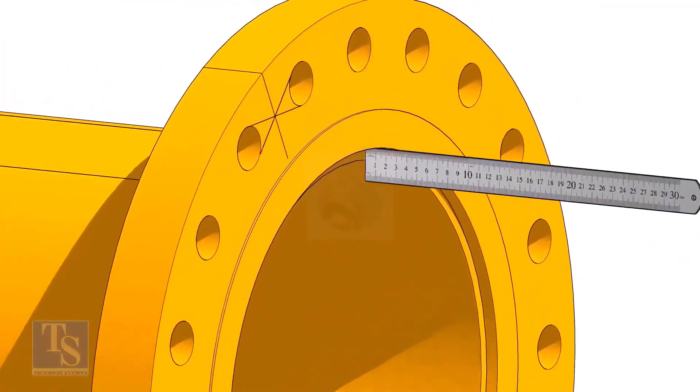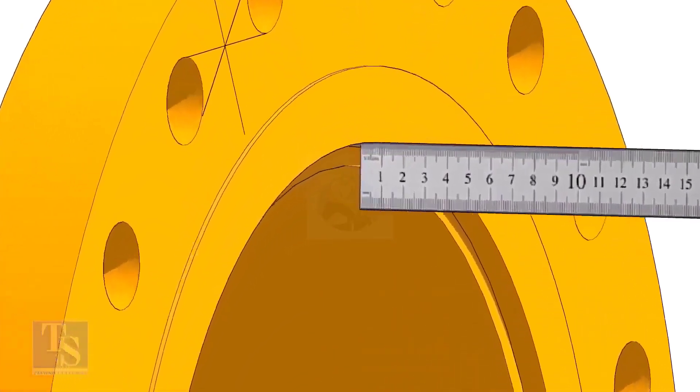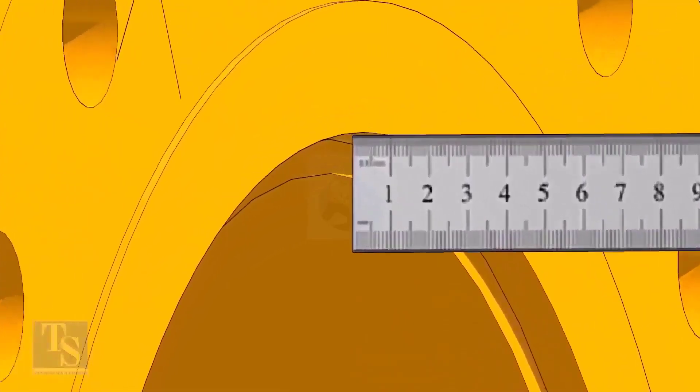Fix the distance between the flange face and the pipe face. Usually, this measurement is equal to the thickness of the pipe.